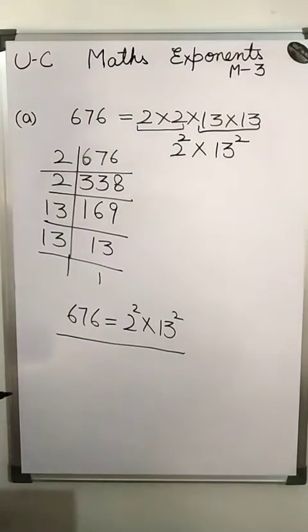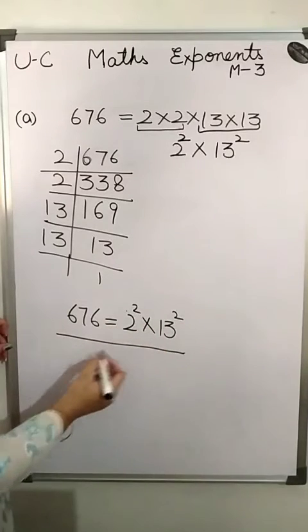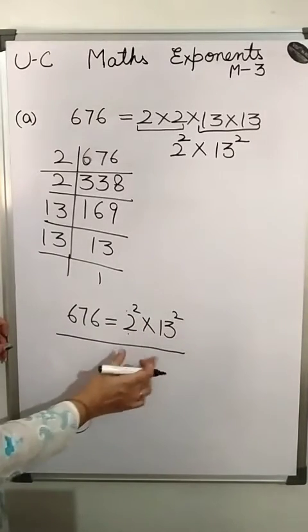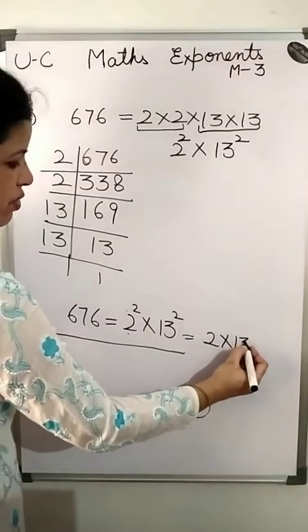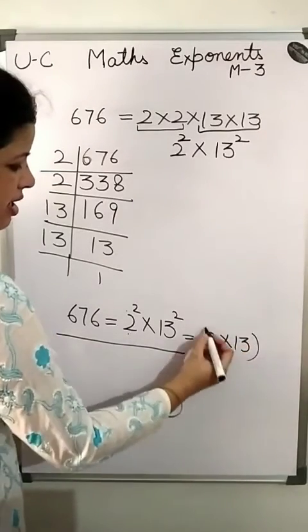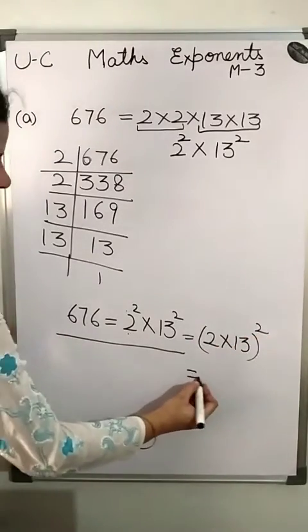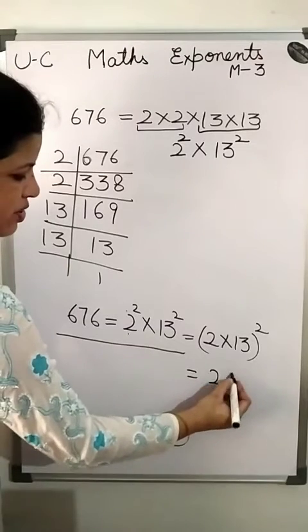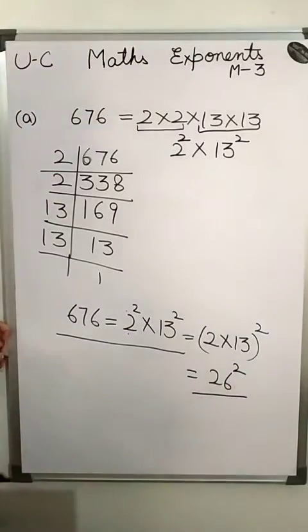Or you can do one more thing: because the powers are the same, write them together and write the combined power just above. So this we can convert — 2 times 13 equals 26 — so it becomes 26 to the power 2. This is also a way to write the answer.